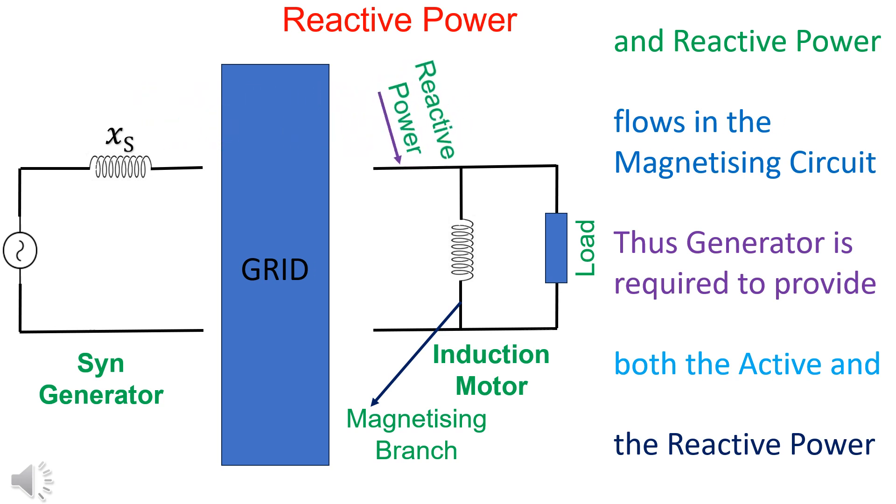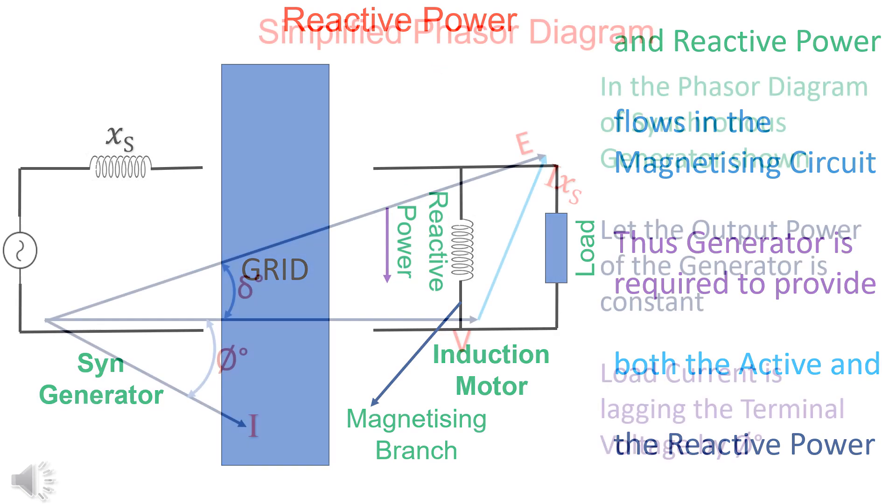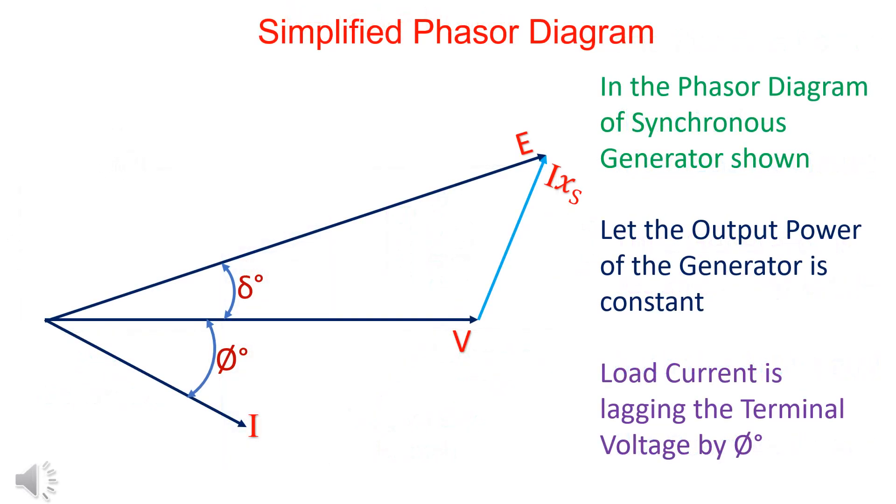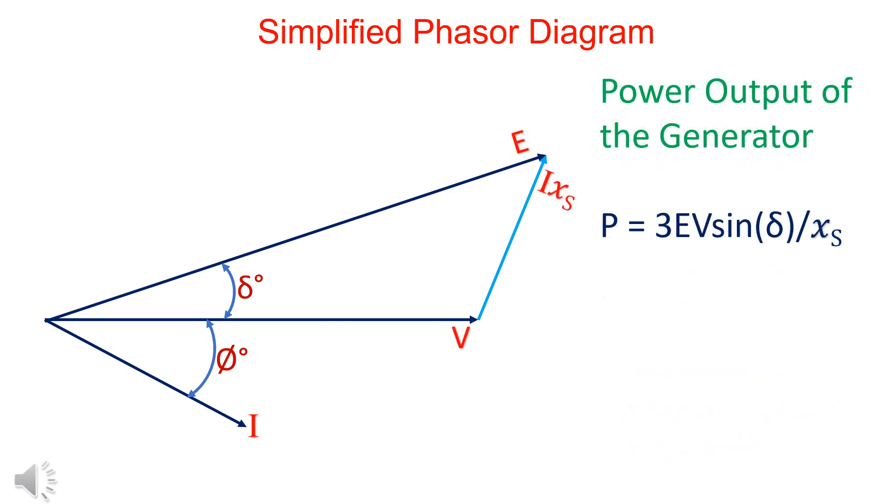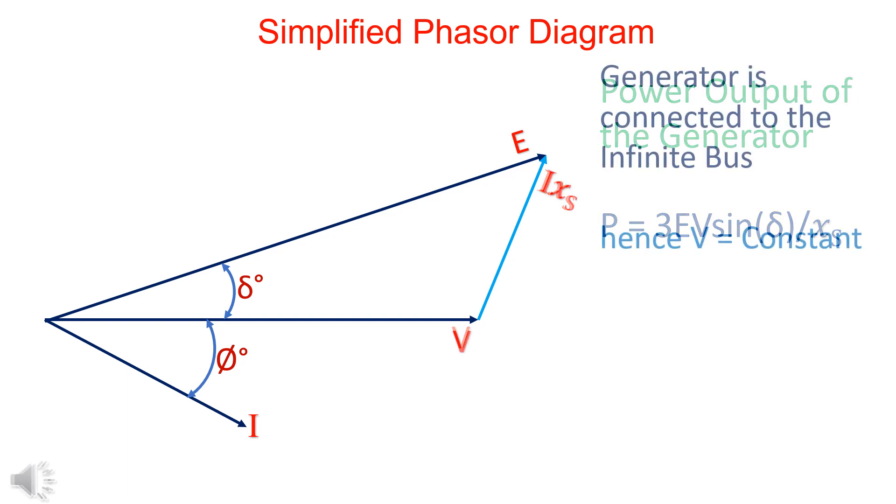The generator is required to provide both the active and the reactive power. Let us consider the case when the output power of the generator is constant. The output power P is given by 3EV sin delta by Xs. When the generator is connected to the infinite grid, terminal voltage V is constant.